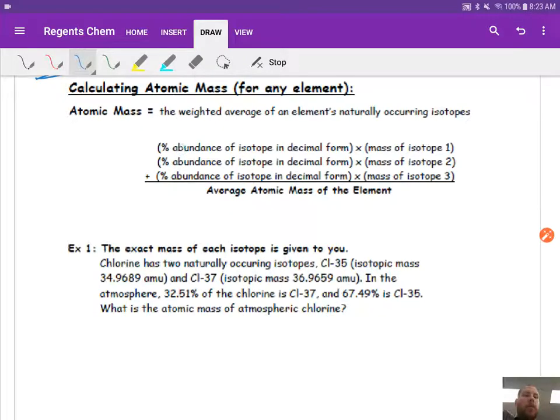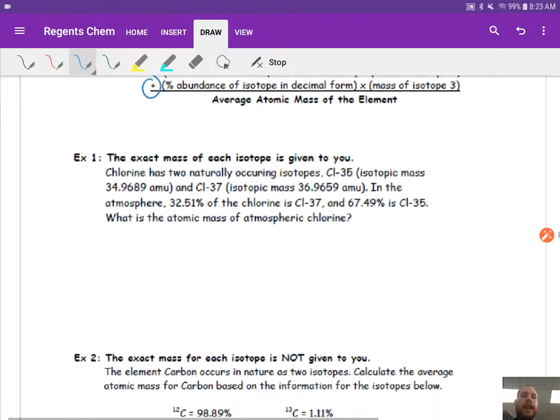So what we're going to do is, it's the percent abundance of each isotope in decimal form, times the mass of that isotope that corresponds to it. We would do that multiplication step for every isotope we have, whether it's 1, 2, or 3, it could be 4, 5, or 6, that's how many they give you, and then we add them up. Once we do the math, once we do the multiplication, we add up all the pieces.